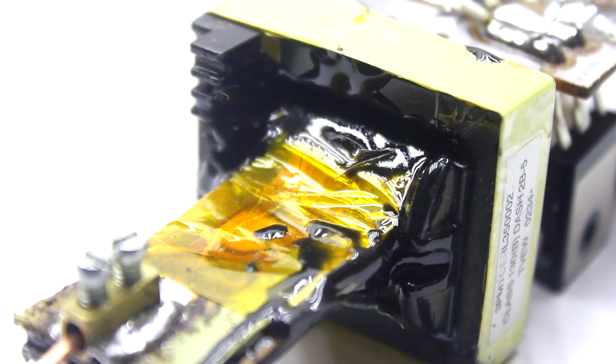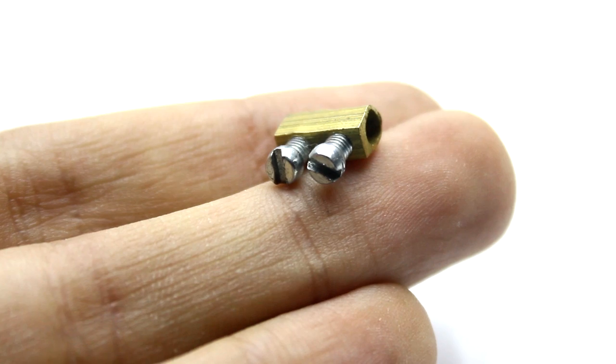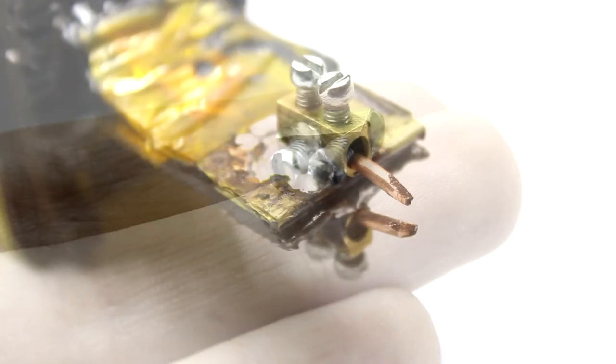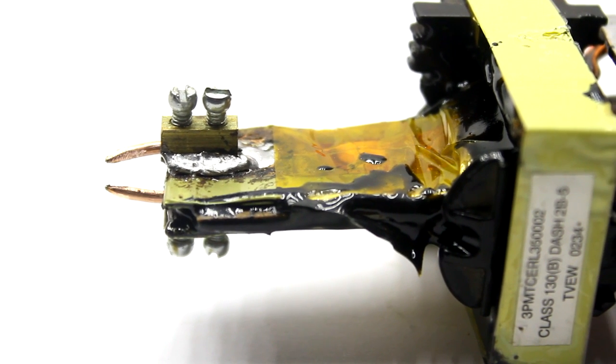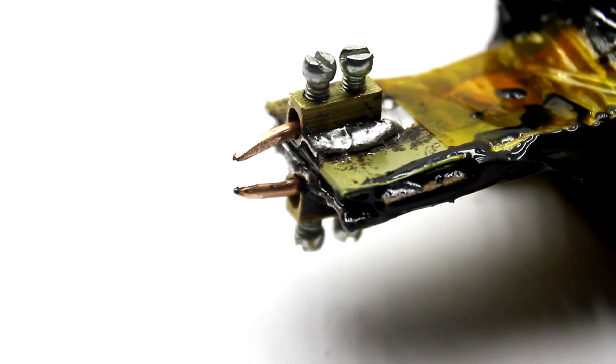Later, the tape was fixed with epoxy adhesive. To the tape are soldered brass terminals, in which are inserted single core copper wires with sharp edges. Wire diameter is 2 millimeters. This is essentially copper electrodes.